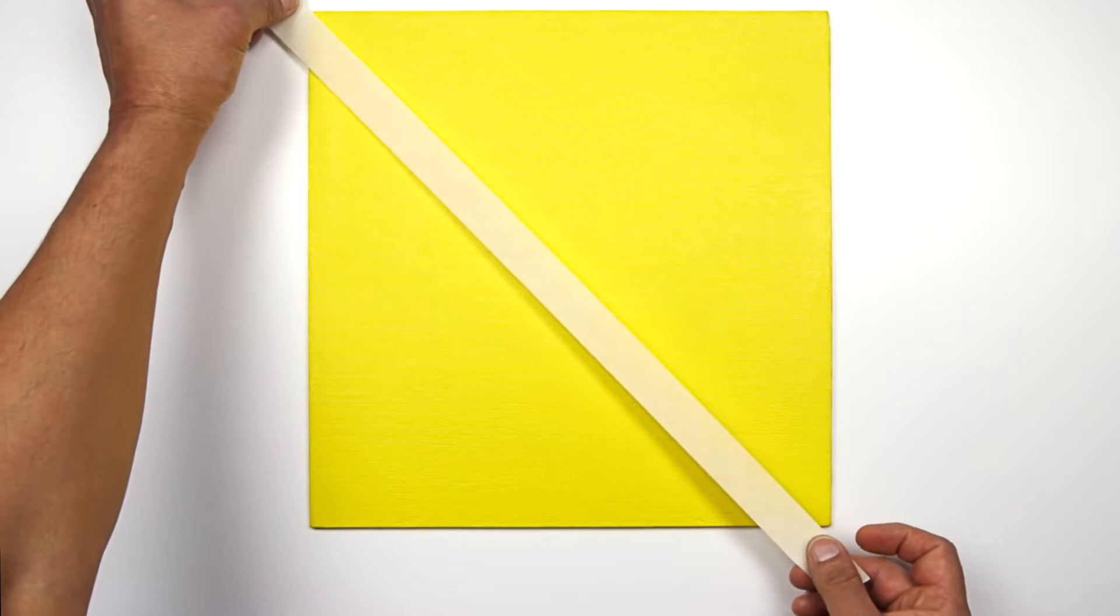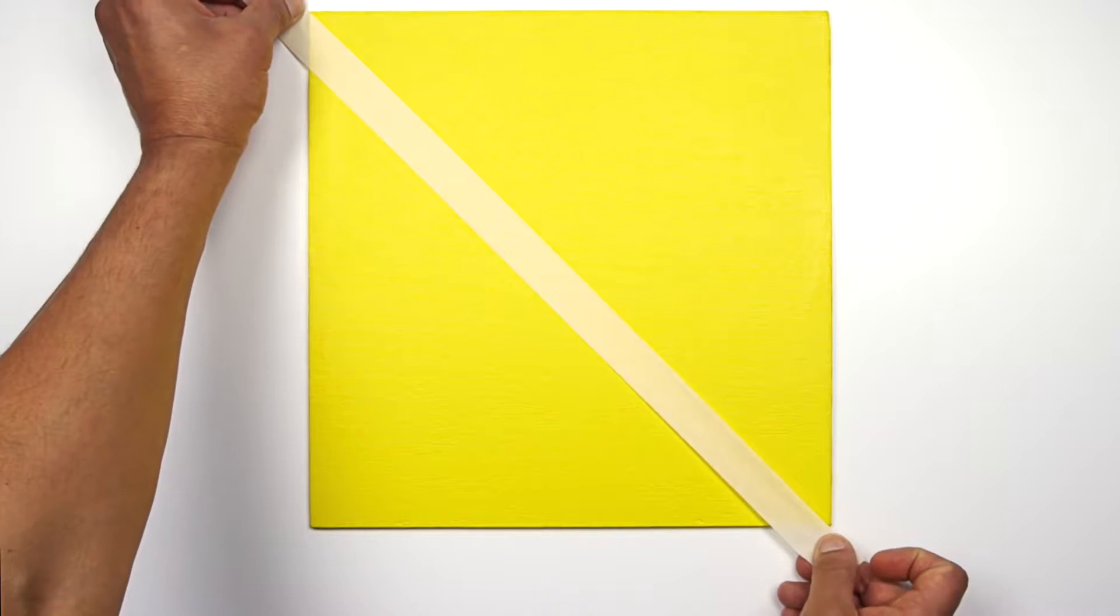In this example I've used two layers of Winsor Newton professional acrylic. The more layers that you use, the more solid the color will be, but the main thing is to allow for the final layer to dry thoroughly before we begin to apply the masking tape.